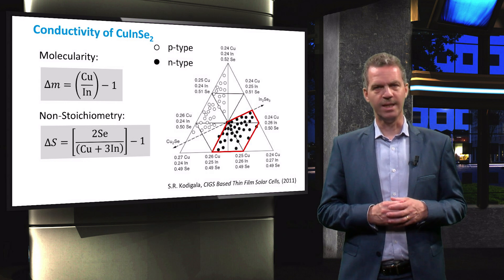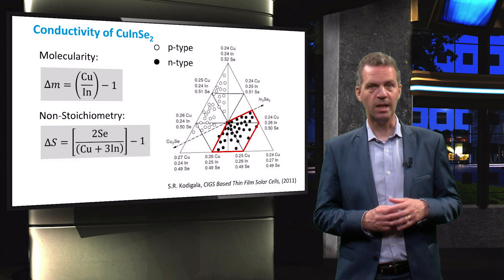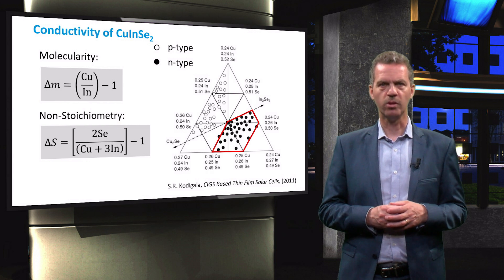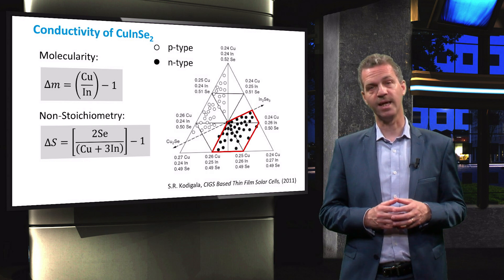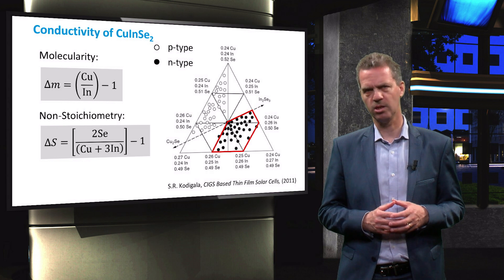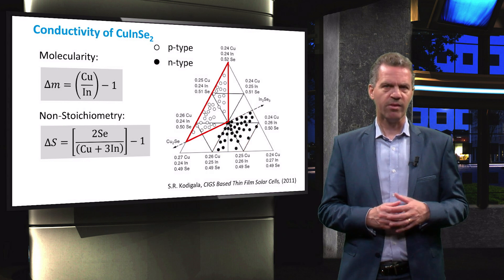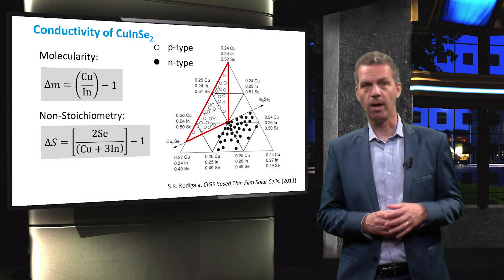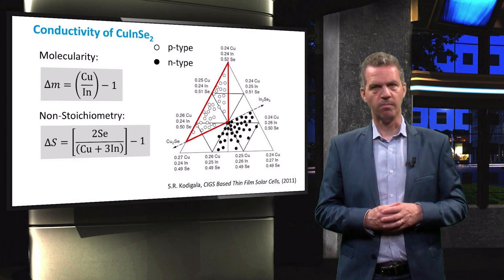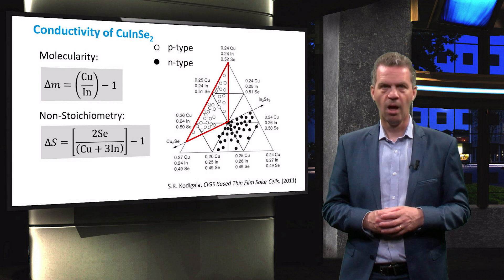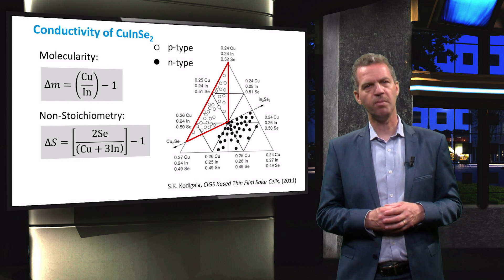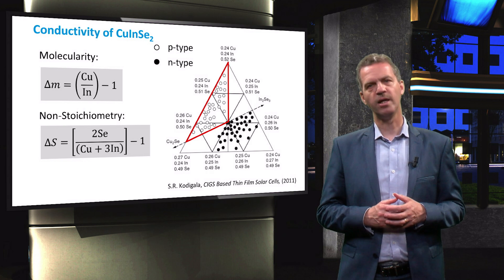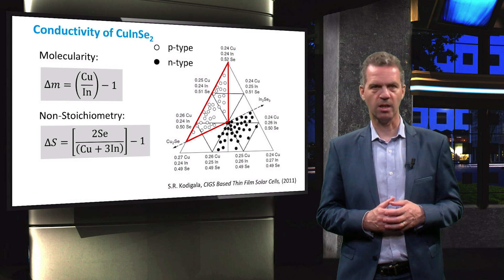When the material is indium-rich and selenium-poor, leading to a negative delta-m and a negative delta-s, the material will show n-type conductivity related to excess indium and selenium deficiency. By making the composition copper-rich and selenium-rich, leading to a positive delta-m and delta-s, the material will show p-type conductivity. This is related to the participation of metal vacancies and excess selenium. In the standard CIGS technology, p-type material is used as an absorber layer.